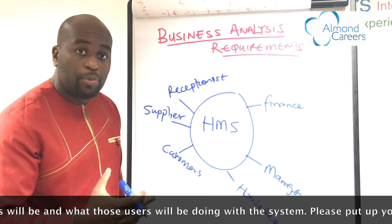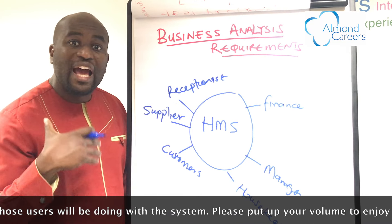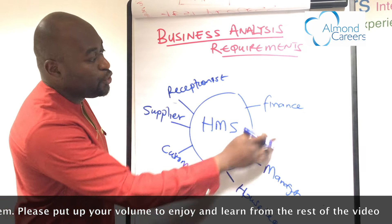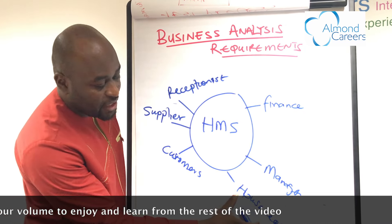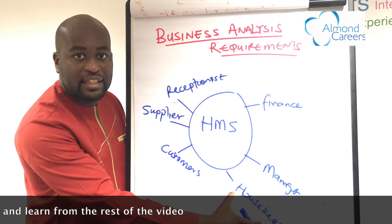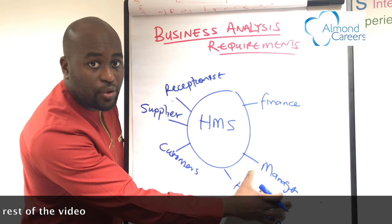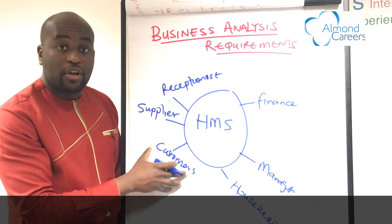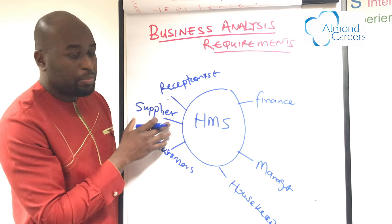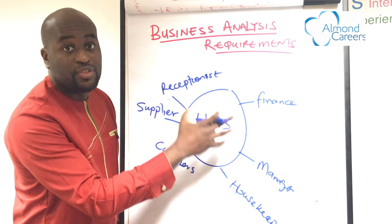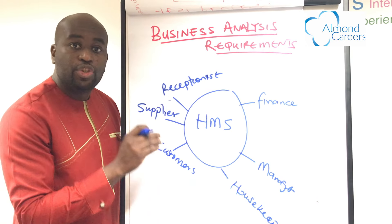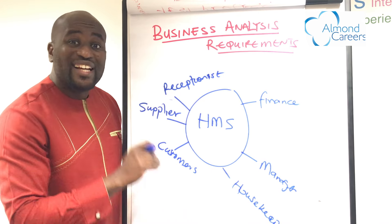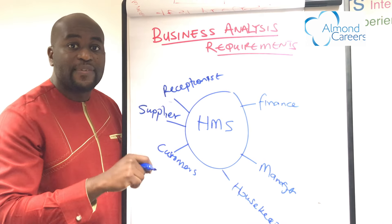When the system is complete, who would the users be? In your first workshop, you're thinking about how to identify the users. I've identified a few: the housekeeper — the guys cleaning the rooms — the manager, finance staff, customers, suppliers, and the receptionist. Identify the users of the system.